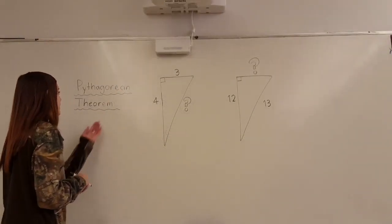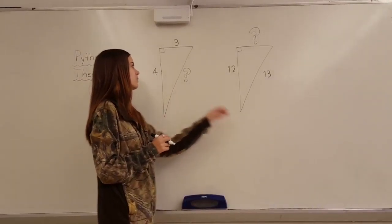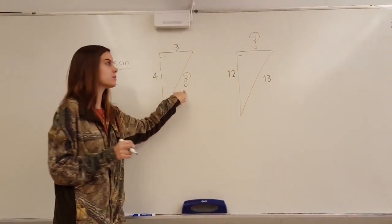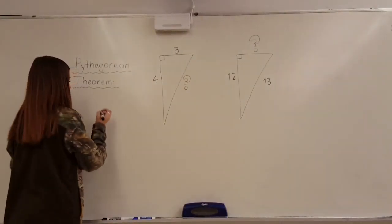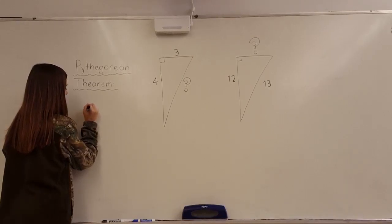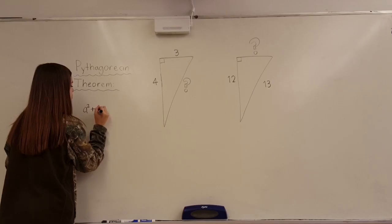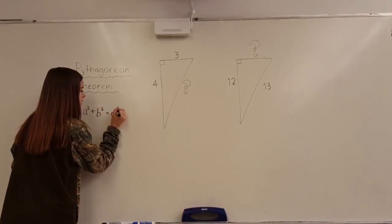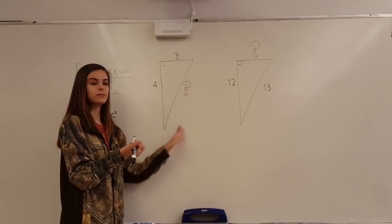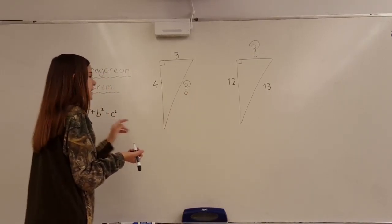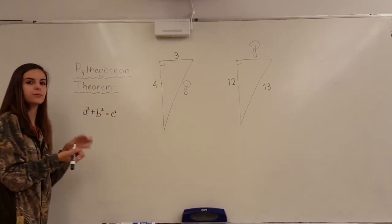And now we'll be doing the Pythagorean theorem. So, right now we have two triangles and one of them is missing a hypotenuse and one of them is missing a leg. And we're going to try to find these. And this is how you do it. We start with the actual Pythagorean theorem, which is a squared plus b squared equals c squared. Now, the hypotenuse is always c. That's what c is. And the two legs are a and b. They're kind of interchangeable. It doesn't really matter which one is a and which one is b.